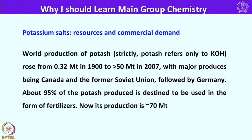Let us look into potassium salts, their resources, and commercial demand. World production of potash — potassium hydroxide — rose from 0.32 metric tons in 1900 to around 50 metric tons in 2007, with major producers being Canada, the former Soviet Union, and Germany. About 90 percent of the potash produced worldwide is used in fertilizer. Currently potash production is around 70 metric tons, which shows the importance of potassium salts.